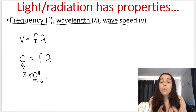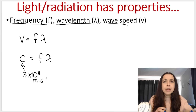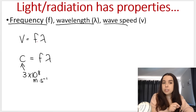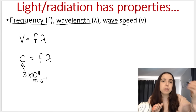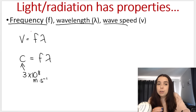All that is important right now is that different lights — different colours of light, different types of light — have different frequencies. So the frequency of red light is different to the frequency of blue light.